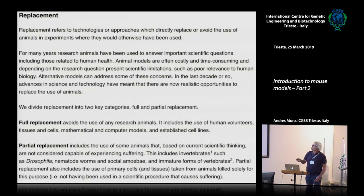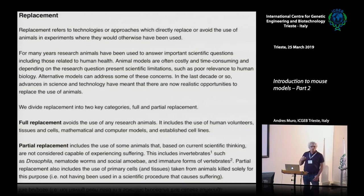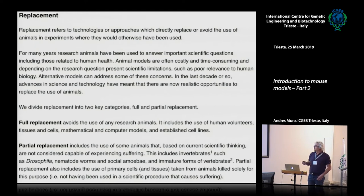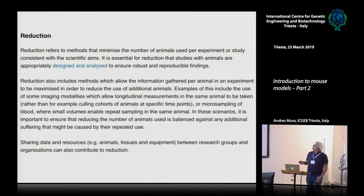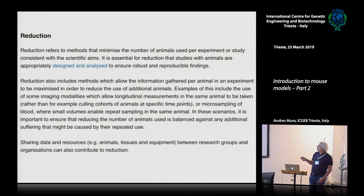I took this directly from the Three R's website. Essentially this is the long version of what I mentioned. Replacement comes in two categories: full replacement or partial replacement — in some cases you cannot avoid using animals, but maybe you can do part of your experimentation using other systems or models. Reduction means reducing the number of animals and maximizing the information gathered per animal in an experiment.